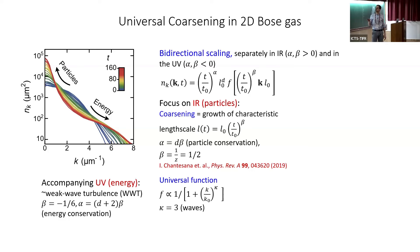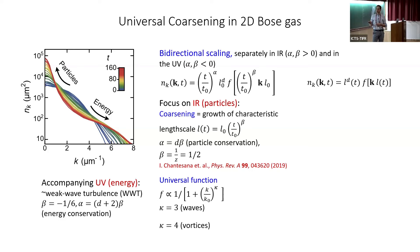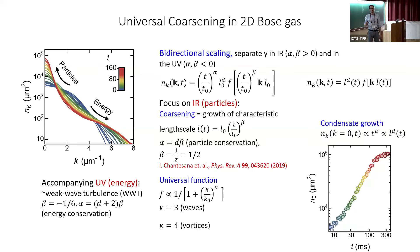One can define a length scale for the IR part, and this scaling equation depends on a single length scale — the definition of coarsening — which just grows in time. The only remaining element is the form of the scaling function. For the compressible gas, theory expects κ = 3, and numerical simulations suggest this scaling function for finite-size systems. For vortex-dominated states, α and β exponents are essentially the same but κ should equal 4. We simplify by focusing on the k = 0 mode — the condensate — and look at how it grows in time.